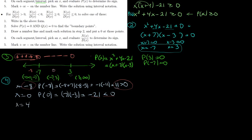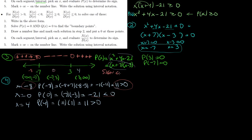For the last interval (3, +∞), pick x = 4. Plugging in: (4 + 7)(4 − 3) = 11 × 1 = +11. So p(x) is positive for all x > 3. This completes our sign chart: positive on (−∞, −7), negative on (−7, 3), and positive on (3, +∞).